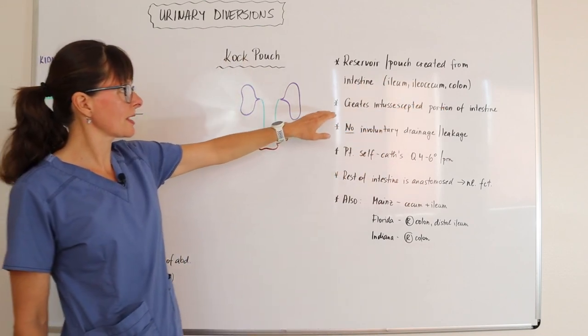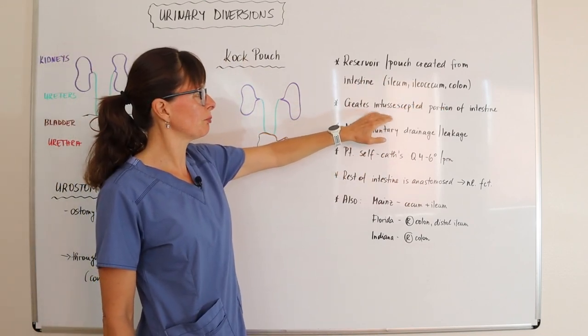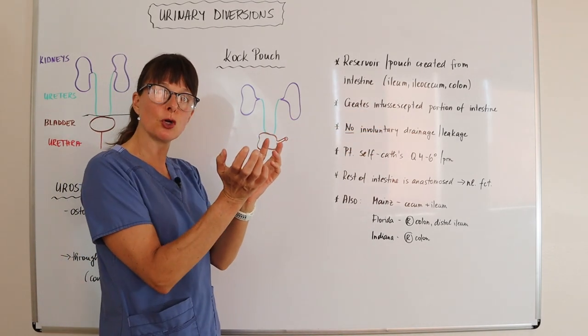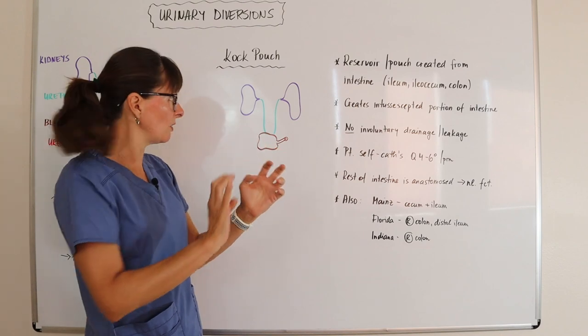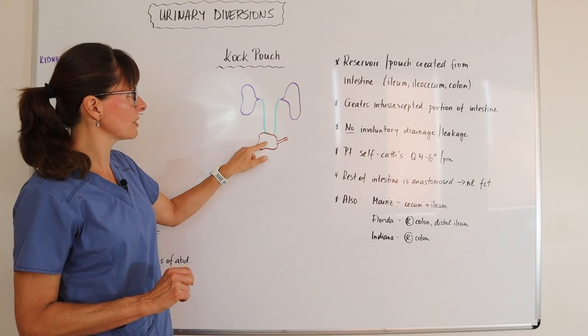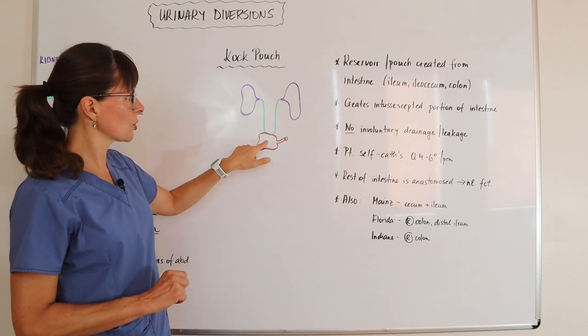The surgeon creates an intussusceptive portion of the intestine, basically a pouch that kind of loops it inside itself, and that pouch then allows for a reservoir to drain the urine.